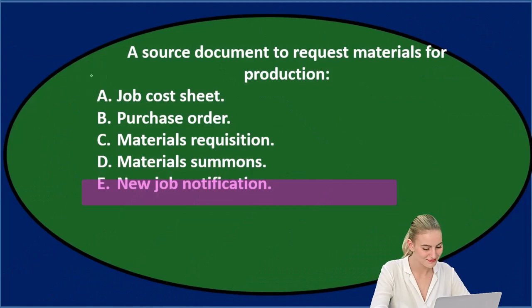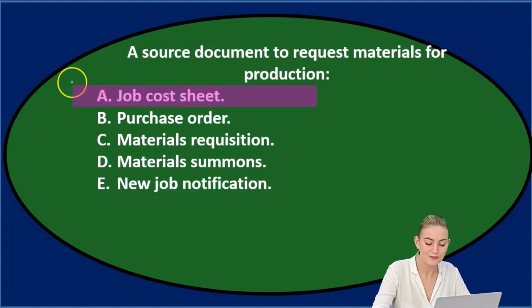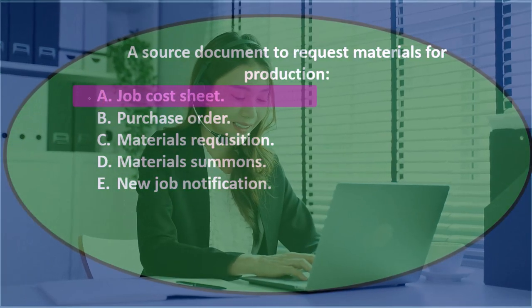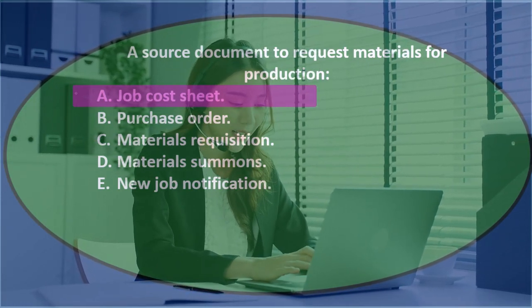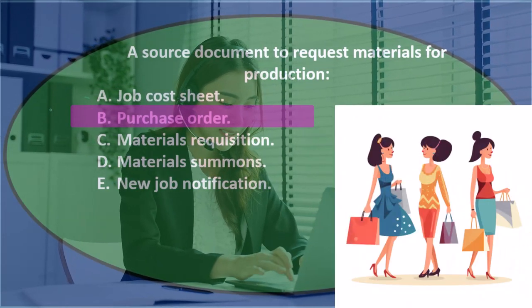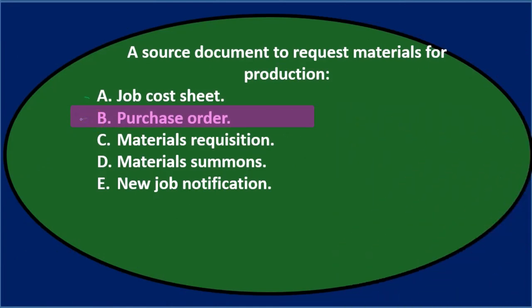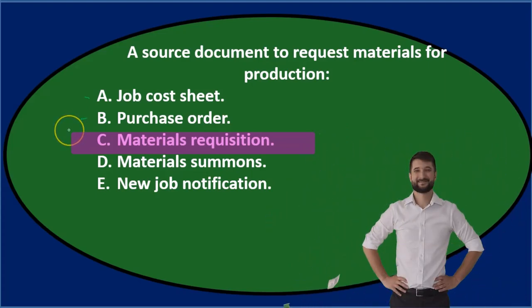Let's go through this again using the process of elimination. A source document to request materials for production — A, a job cost sheet: we might think that's what we're working on, so I'll keep that for now. B, a purchase order: materials is the first step and we might need a purchase order for that, so I'll keep that. C, materials requisition — it's requesting materials, so that sounds reasonable. I'll keep that for now.